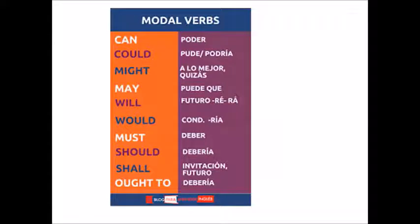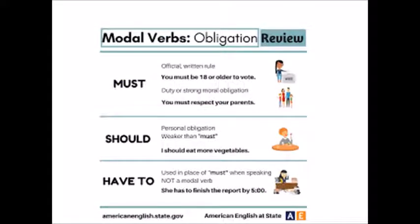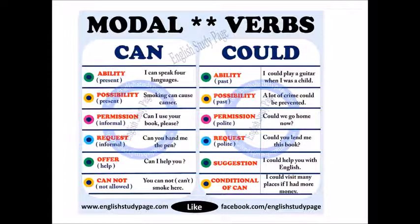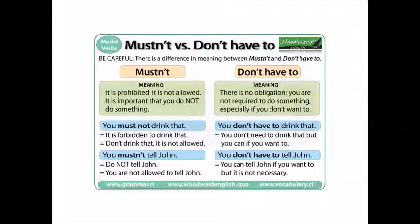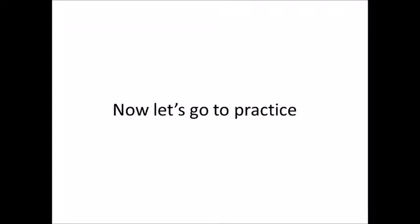Modal verbs can be used in different ways. For example, 'can' and 'could' are both used for permission or possibility, but they are used in different time frames — present or past. 'Mustn't' and 'don't have to' are also different: 'mustn't' means something you must not do, while 'don't have to' is more like it's not required. Now let's go to practice!